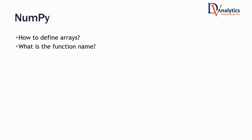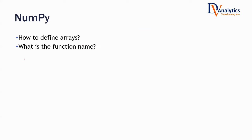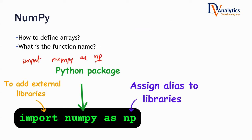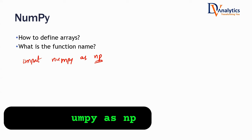So first of all, how do you define arrays and what is the function name? Can you make a guess what will be the function name if I want to define an array? What is the basic function name? First of all, I will write `import numpy as np`. NumPy is the package — N-U-M-P-Y — as NP. NP is the alias. And then I will say `np.array`. So let us quickly define an array and get an understanding of how we work with these arrays.